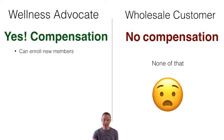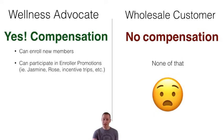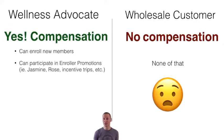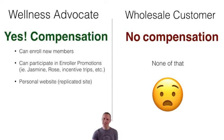To go over that in detail: they can't enroll new members. They can't participate in enroller promotions. Every once in a while, doTERRA has some enroller promotions — for instance, earning a free jasmine essential oil or rose essential oil, or participating in incentive trips. Those are enroller promotions. You win those things by enrolling people, so if you can't enroll anybody, you can't participate in those. That makes sense, right?